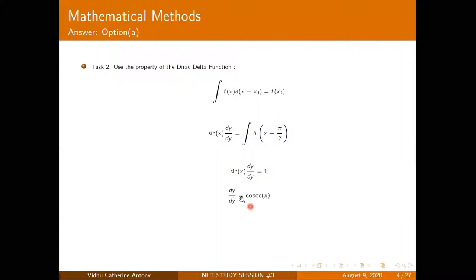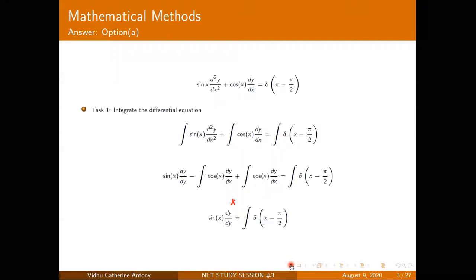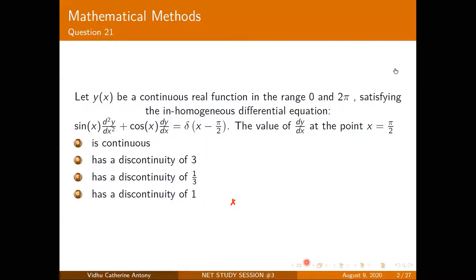So the right-hand side evaluates to 1. Taking sin(x) to the other side gives dy/dx = cosec(x). Going back to the question — they asked for the value of dy/dx at x = π/2. Evaluating cosec(π/2) gives 1. Since cosec(x) is a continuous function, it is not discontinuous at x = π/2 or at any other point. So the answer is that dy/dx is continuous.